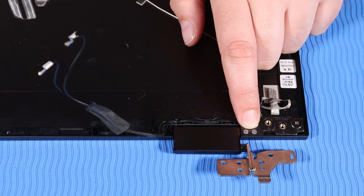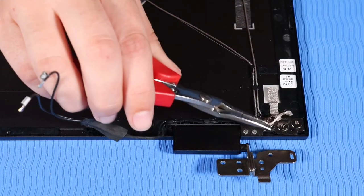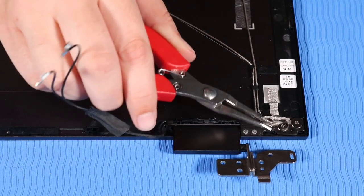The left hinge is replaced in the same manner. Reattach the mylar tape that covers the right hinge and display enclosure.